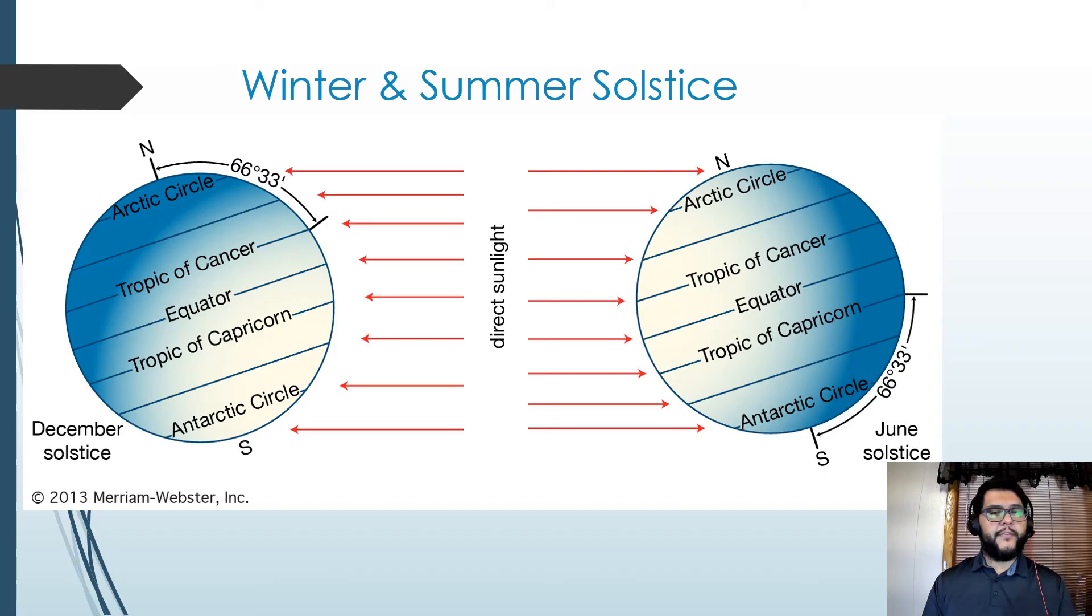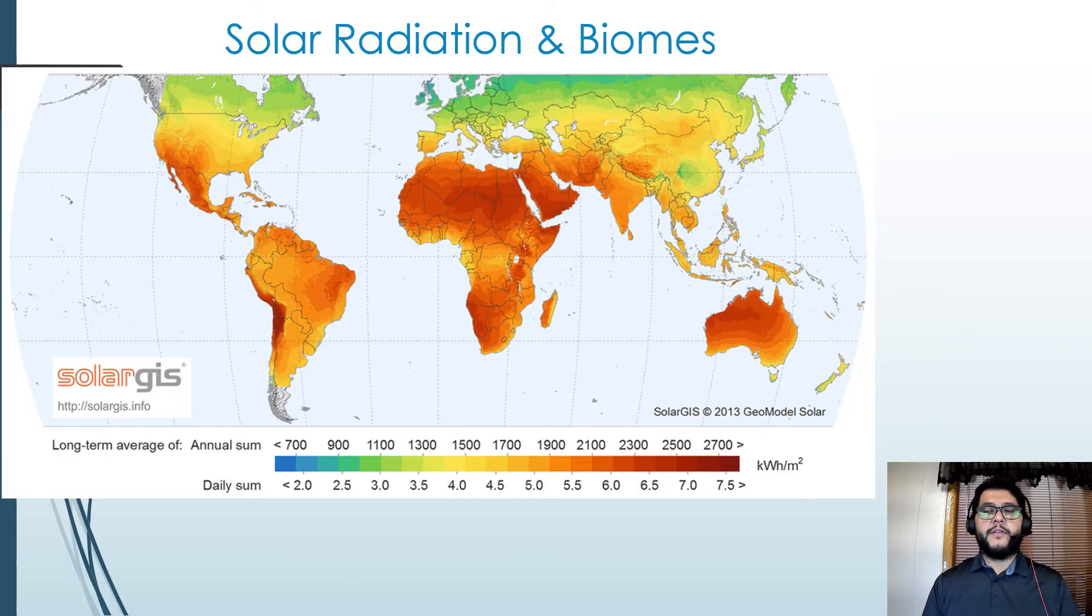So here you can see the different amounts of solar radiation in the different areas of the world and how that relates to biomes. As you can see, there are really high amounts of solar radiation towards those middle latitudes and the tropics and those spaces there. And then as you get—so I'll show you that right here. If you're looking at these spaces right here...